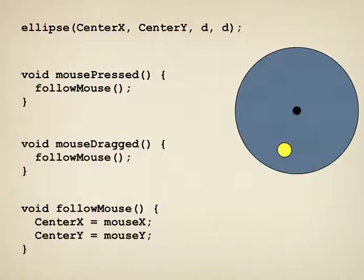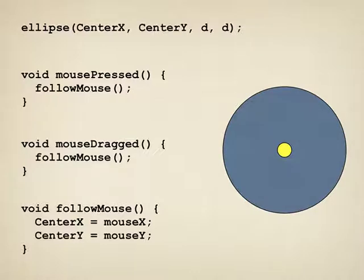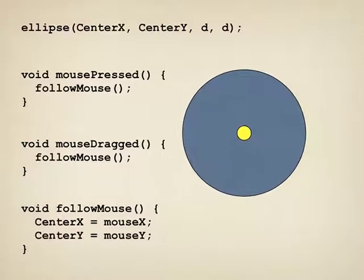It too just calls follow mouse. So every time the mouse moves, we just set the center of the ellipse to the value of the mouse. So what happens the first time when we click the mouse? That is what happens. The center of the ellipse jumps suddenly to the location of the mouse. And now as we move the mouse around, the circle moves with us.